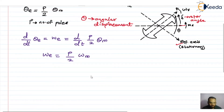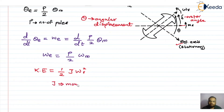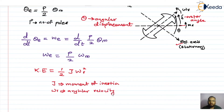Now I want to know the kinetic energy stored in the rotor of this machine. For linear motion kinetic energy is (1/2)mv², but for angular motion I write it as (1/2) J omega r squared, where J is the moment of inertia and omega r is the angular velocity.